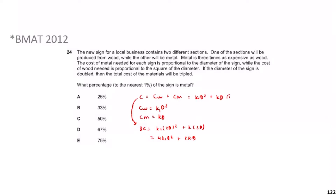I'll call these equation one and equation two. If I multiply equation one by 2, I get 2C equals 2k₁d² plus 2kd. Then subtracting that from equation two: 3C minus 2C equals C, and 4k₁d² minus 2k₁d² equals 2k₁d², while the 2kd terms cancel out. So C equals 2k₁d². Substituting back into the doubled equation gives 2C equals C plus 2kd, so C equals 2kd.